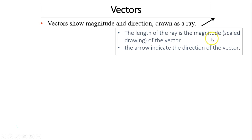It's a scaled drawing, so it depends on the length of the ray indicates how big the magnitude is. The arrow indicates the direction of the vector.